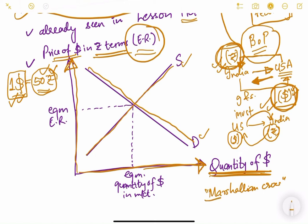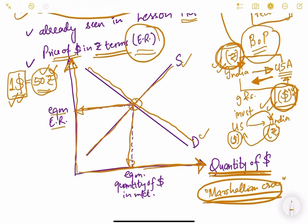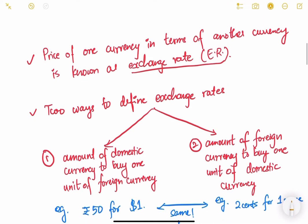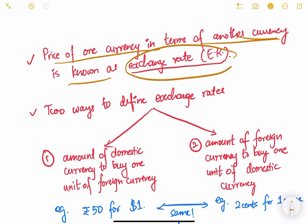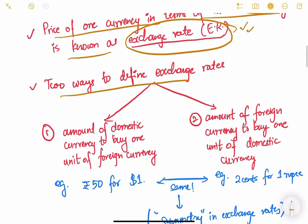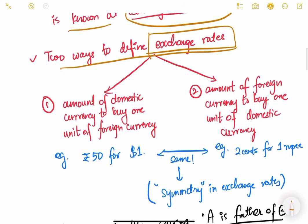The demand-supply curve is also known as the Marshallian cross — Marshall was an economist who first propounded this theory of demand and supply. Wherever the demand and supply intersect, that is the equilibrium point, giving us the equilibrium quantity of dollars in the market and the equilibrium exchange rate. Basically, the price of one currency in terms of another currency is known as the exchange rate. We can define exchange rate in two ways: one is the amount of domestic currency needed to buy one unit of foreign currency.